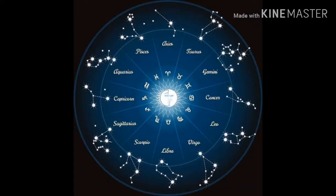Before we understand Nakshatras, we first need to understand what exactly the zodiac belt is. Imagine that the space around the Earth is a circle — the sky surrounding the Earth is a circle. Let us divide this circle into 12 equal parts. This circle is known as the zodiac belt. A circle is 360 degrees, so if you divide 360 degrees into 12 equal parts, you get 12 parts each of 30 degrees. Each sign is an arc of 30 degrees.